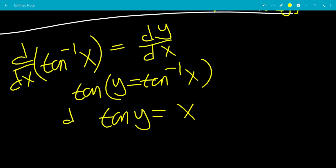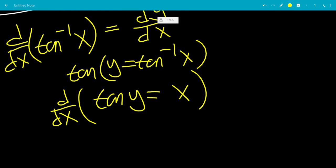So, now we can do implicit differentiation derivative with respect to x on both sides, leaving us with the derivative tangent of y is secant squared y times the derivative of the inside with respect to x, which is dy dx. On the right-hand side, we have the derivative of x, which is 1.